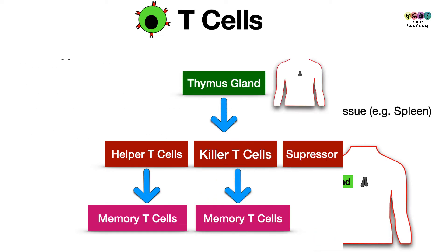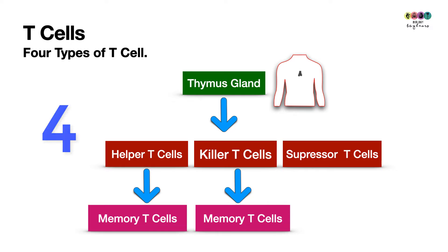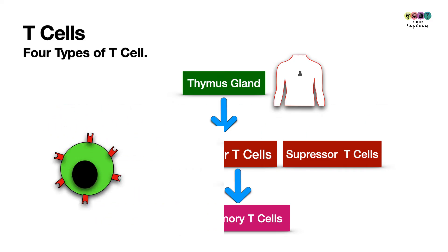T cells are really important when cells become infected or cancerous, so they deal with cells mostly. There are four different types of T cells, and we know they mature in the thymus gland. There are helper T cells and killer T cells — these are the two most important. Killer T cells are often referred to as cytotoxic cells. The other types produced are suppressor T cells and memory T cells.